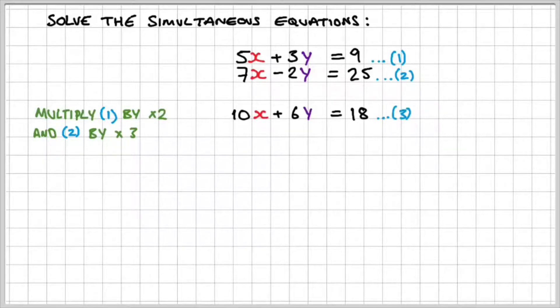So we get 10x plus 6y is equal to 18. We can label that equation 3. And 21x minus 6y is equal to 75. And we can label that equation 4.